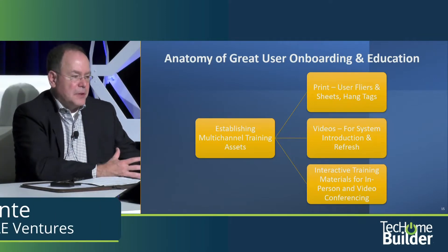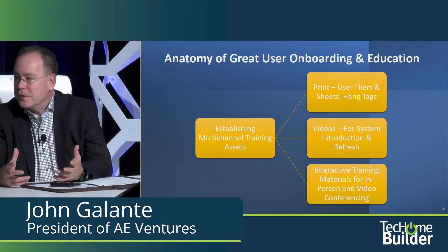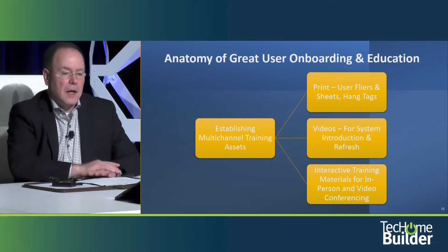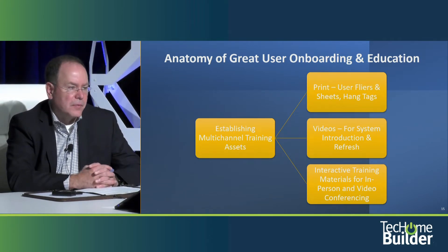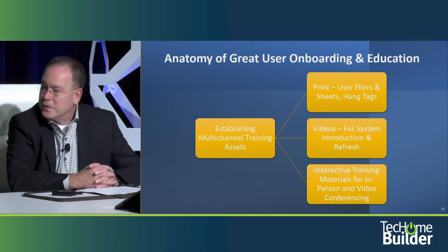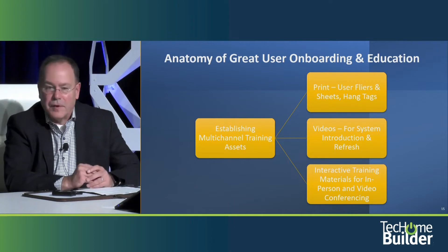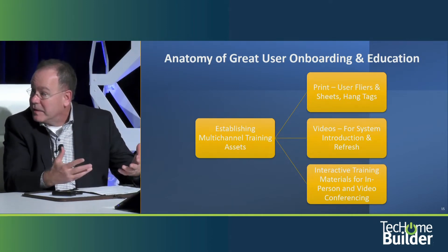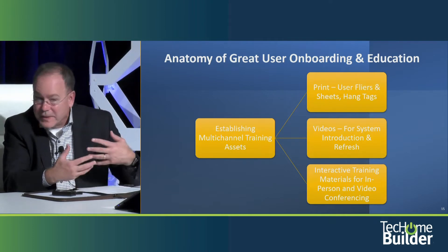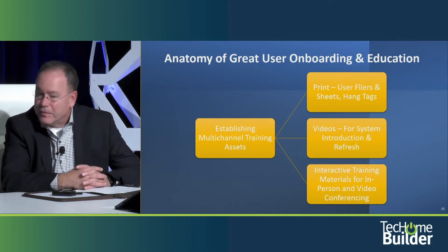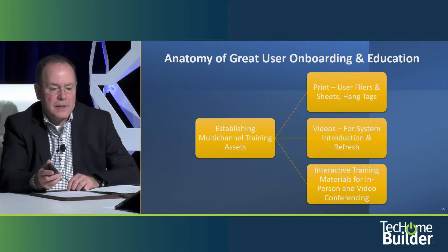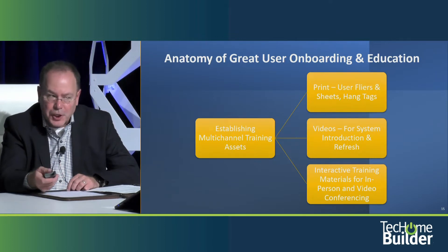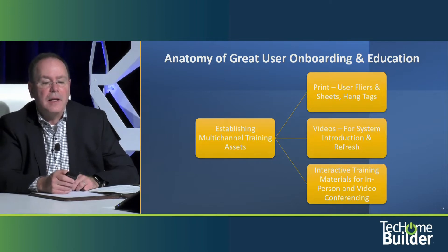If you have a system that's trainable, do you have trade partners who can deliver training and onboarding? You need assets that go with this. And like every other form of communication, they need to be multi-channel: digital, print, interactive in-person, and interactive video conference. All of these different delivery paths require a different set of assets.